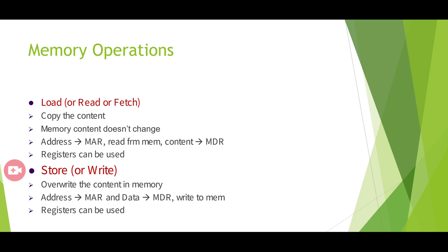Using that address, the content at that address is read from memory and stored into the MDR — the Memory Data Register. If the content is data or an instruction, it is first placed into MDR. If it is data, it is stored as-is; if it is an instruction, it is copied from MDR into the IR — the Instruction Register. For the store operation, the address is passed to memory through MAR, and the data present in MDR is written back into memory.